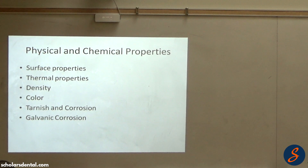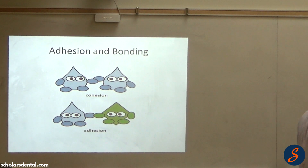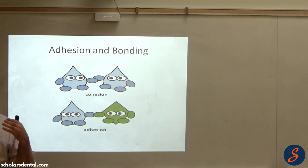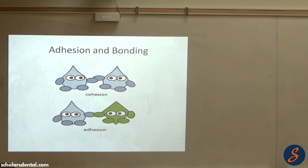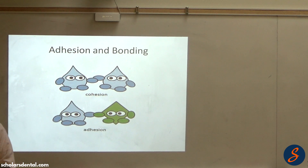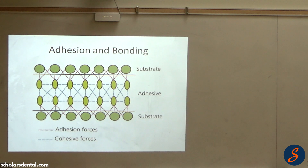Let's talk about surface properties, starting with the terms adhesion and cohesion. Adhesion means when two molecules of different types create a bond together. When it's two molecules of the same type, we call that cohesion. Same to same is cohesion; two different types is adhesion.